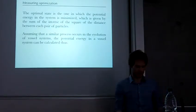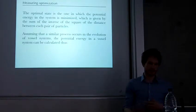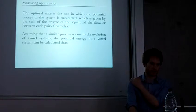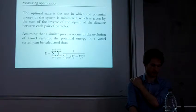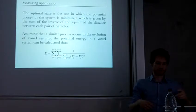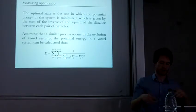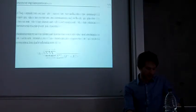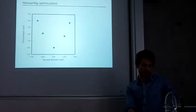As you increase the distance from the source, the force becomes weaker. So if your two particles are confined to a space, they'll move apart until their mutual distance is maximized. The optimal state is the one in which the potential energy in the system is minimized, which is the inverse of the square of the distance between the particles. If we assume that a similar kind of process occurs in the emergence of vowel systems, then we can measure the potential energy in a vowel space with this formula, which just says take the distance between two vowels, take the square, take the inverse, and just sum it all up for all the possible pairings.